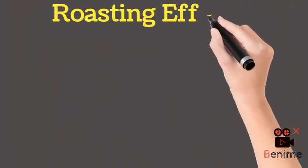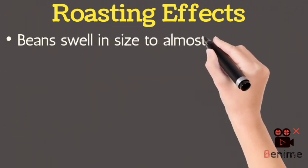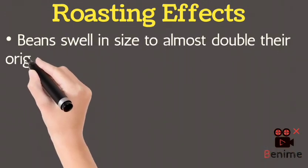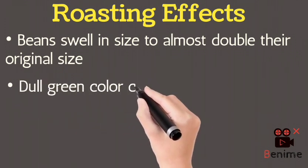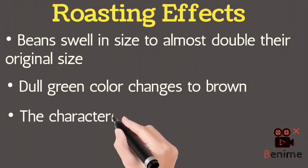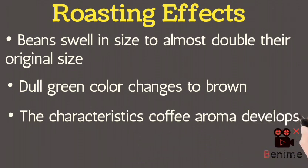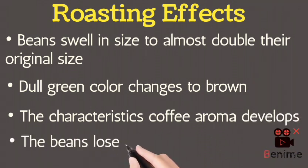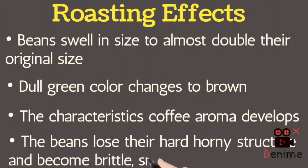Roasting Effects. Beans swell in size to almost double their original size. Dull green color changes to brown. The characteristics of coffee's aroma develops. The beans lose their hard, horny structure and become versatile, smooth and firm.